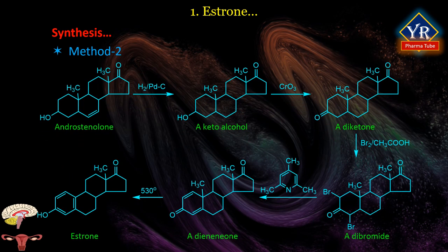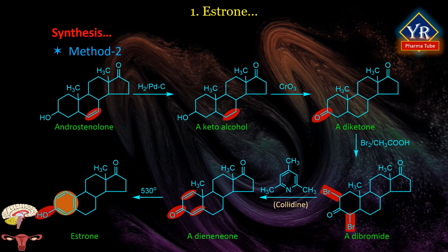Method 2 uses androstenolone prepared from dibromocholesterol acetate. Reduction of the double bond in androstenolone by hydrogen over palladium on carbon gives a keto alcohol, which is further oxidized by chromium oxide to a diketone. Bromination with molecular bromine in acetic acid gives a dibromide. Dehydrobromination by heating in collidine forms the dienone. Heating this compound at about 530°C removes a methane molecule from position 10 to aromatize ring A and yield the desired estrone.